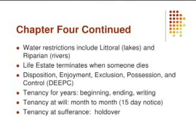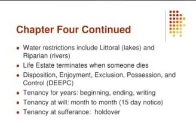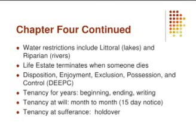A tenant for years is a non-freehold estate that has a beginning date, an ending date, and is in writing. A tenancy at will — a good example is a month-to-month renter; remember there's a 15-day notice for eviction. The tenant at sufferance, however, is simply a holdover with no agreement whatsoever. And that's the end of that review.